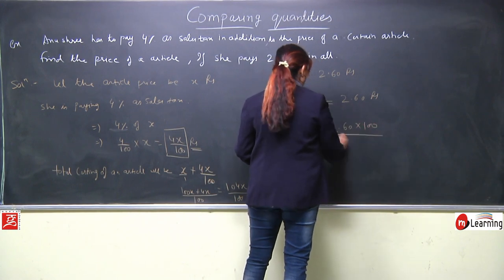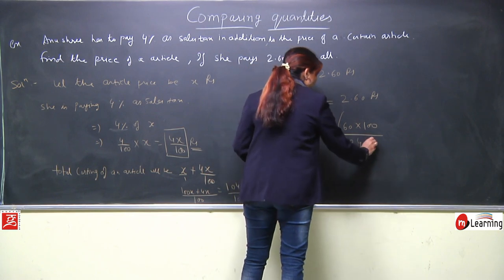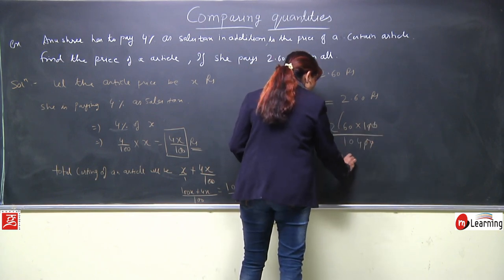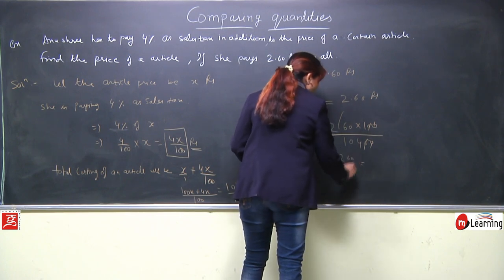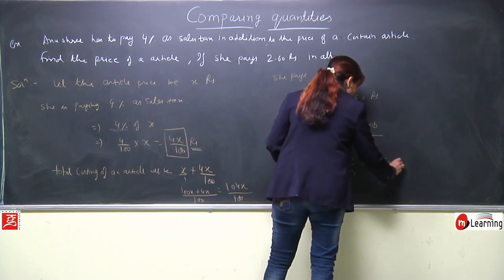So x equals 260 into 100 upon 104. We removed the decimal, two zeros. Zero zero will be canceled. It is 260 upon 104. Either you cut it or divide it. Your answer is 2.50 rupees.